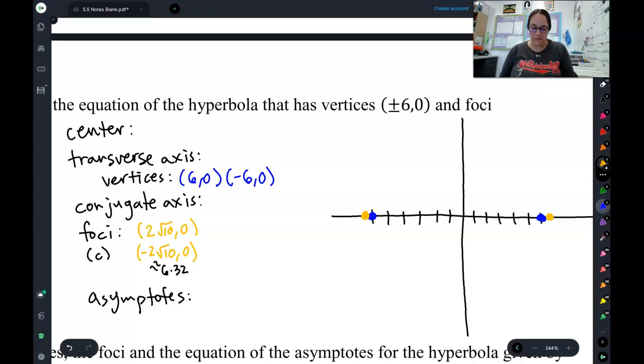Now, let's list a couple other things we know from this. First off, from these vertices, I know my transverse axis is going to be 6 long, and I know that C is going to be 2 square roots of 10 long.